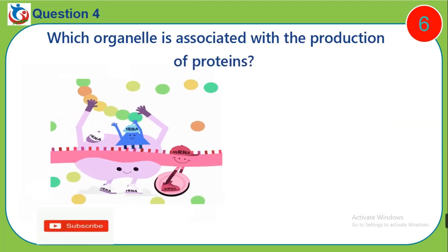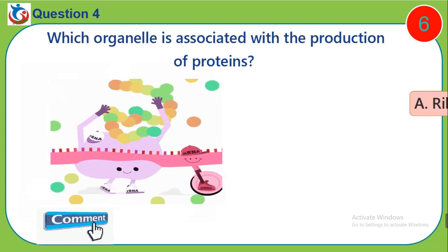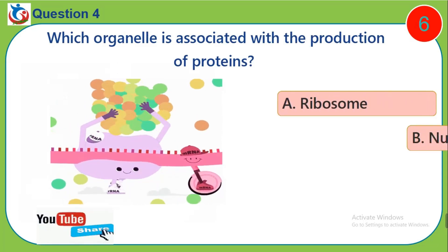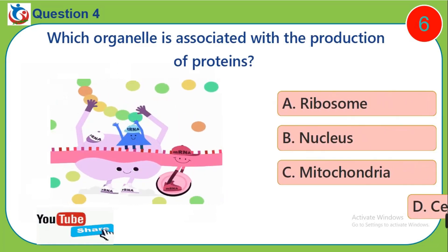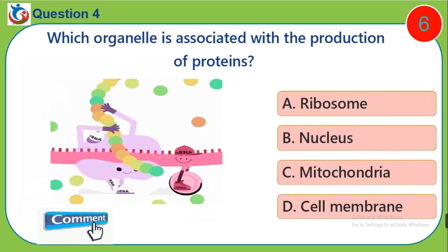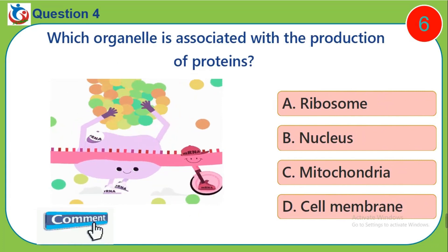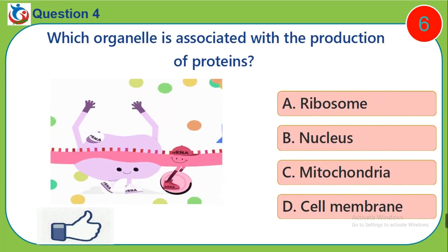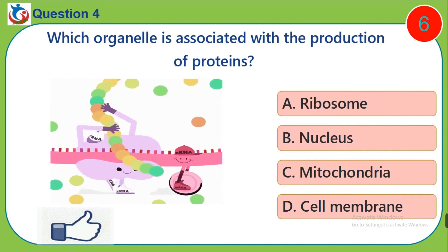Question 4. Which organelle is associated with the production of proteins? A. Ribosome. B. Nucleus. C. Mitochondria. D. Cell membrane.